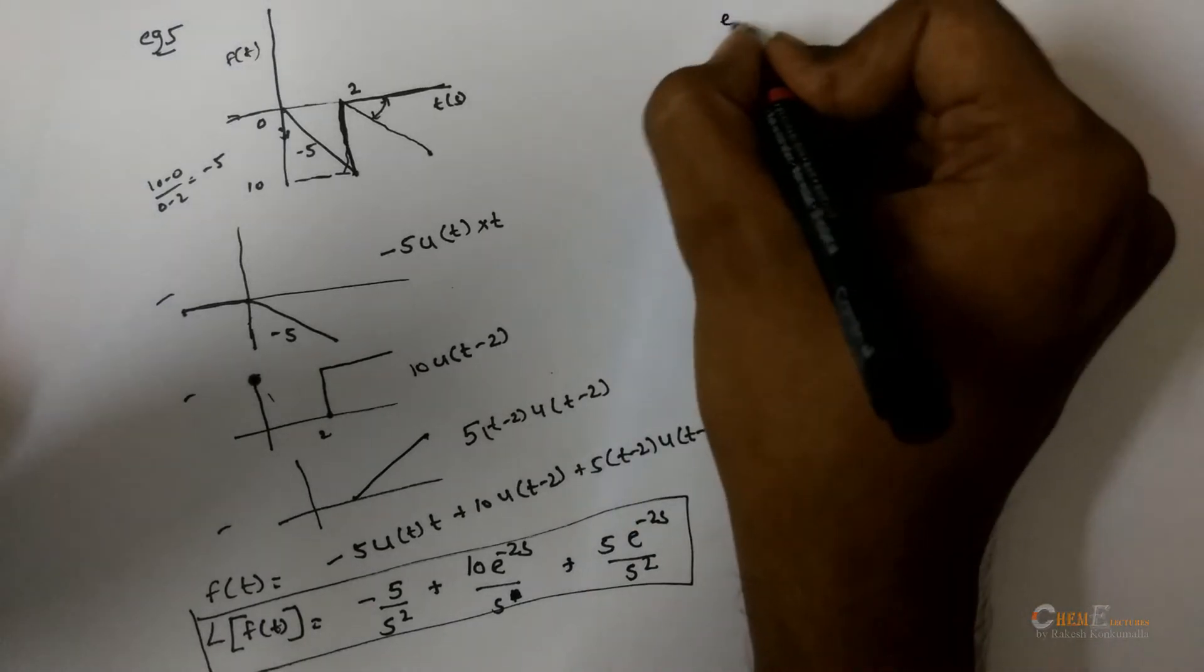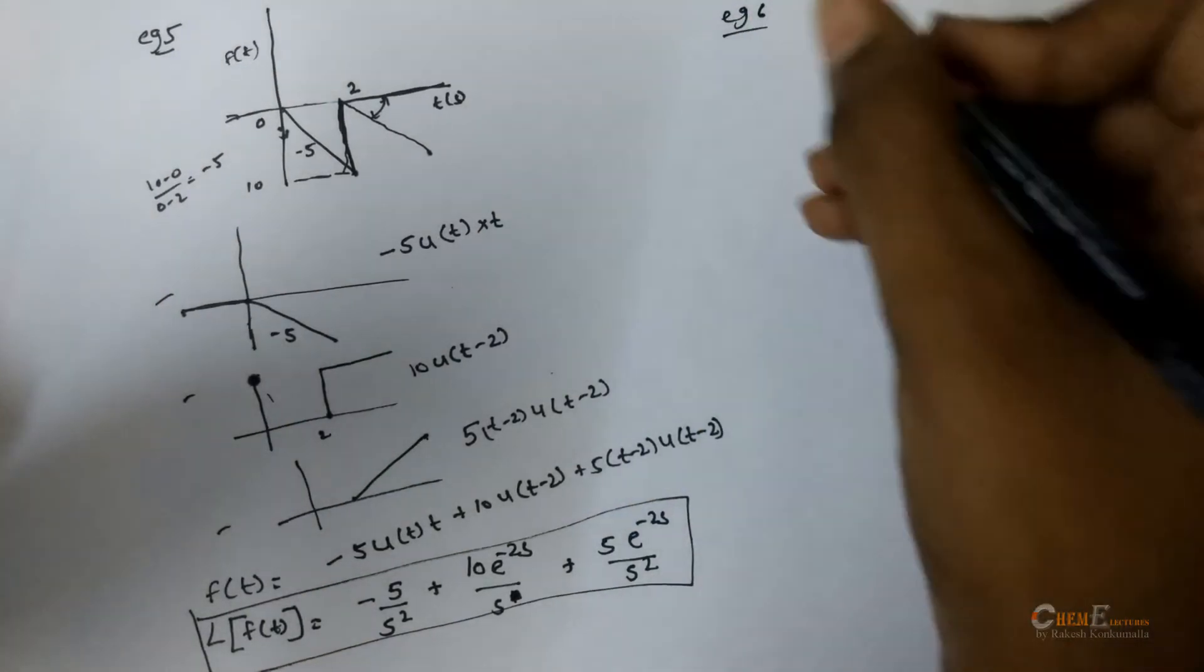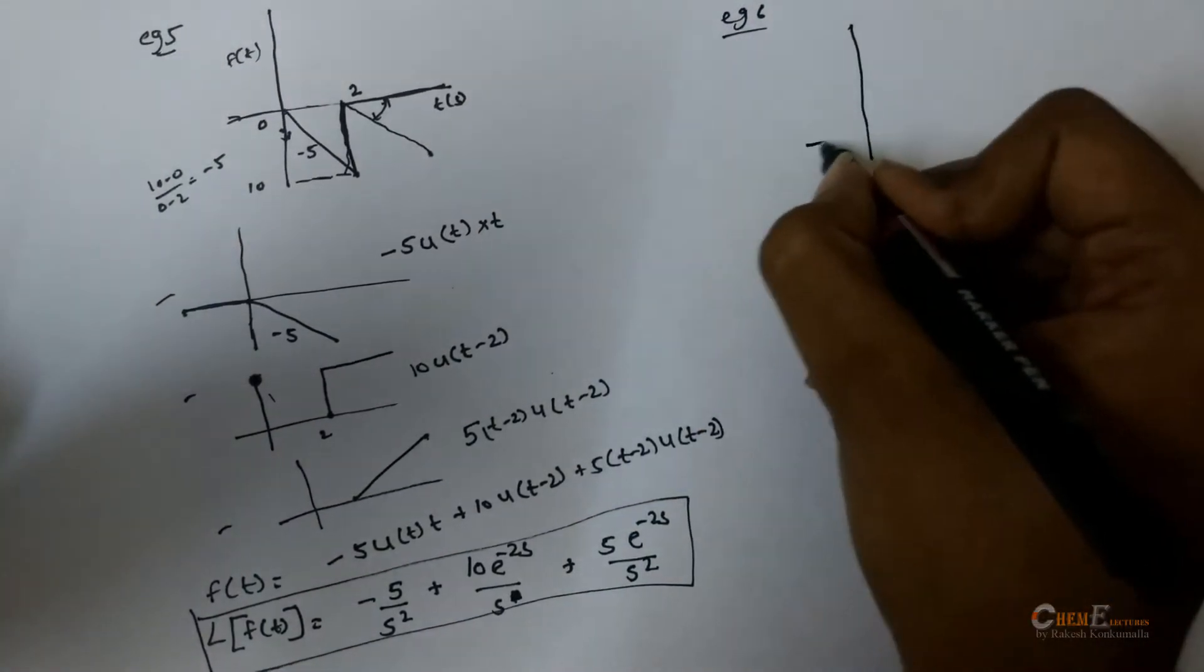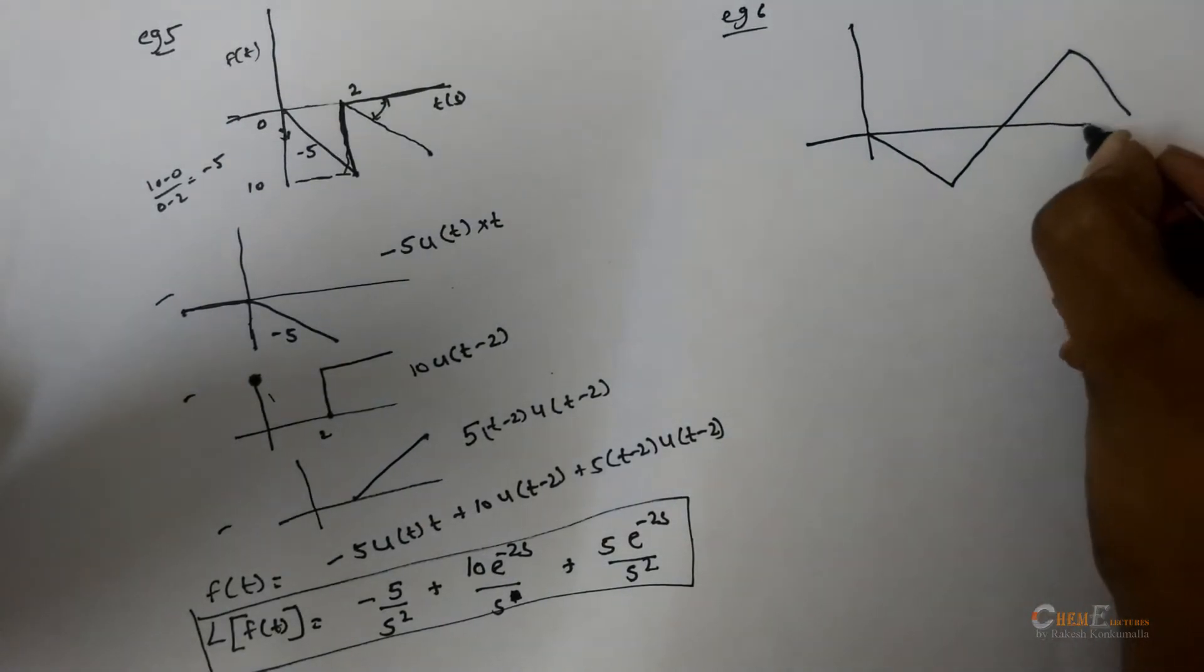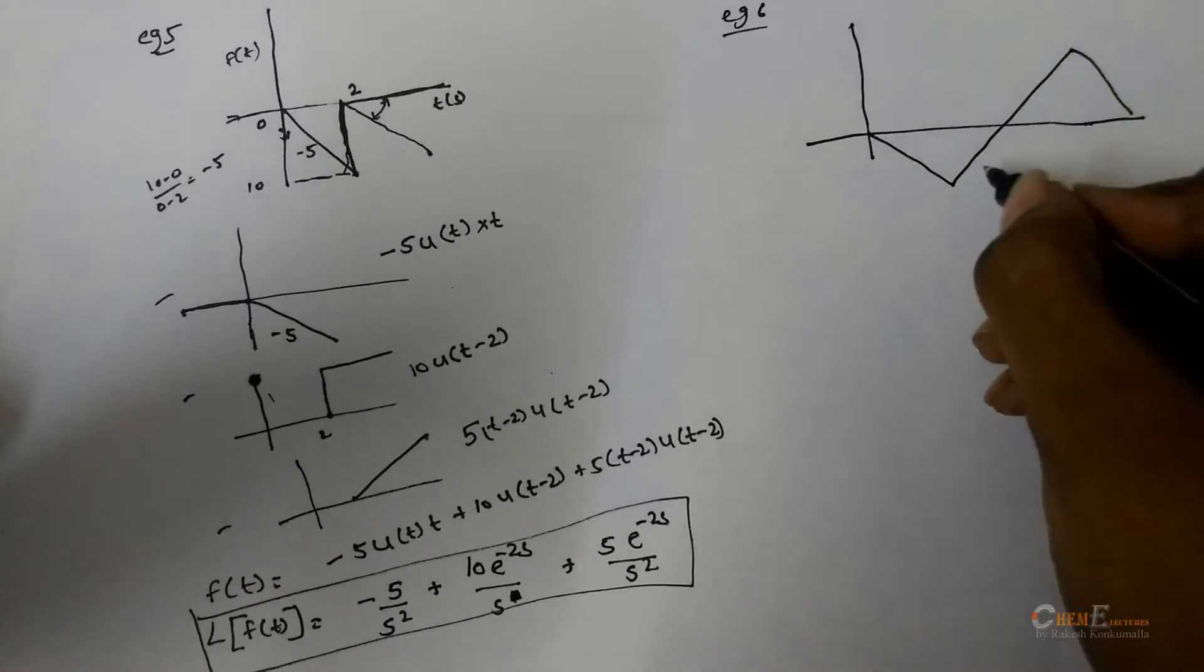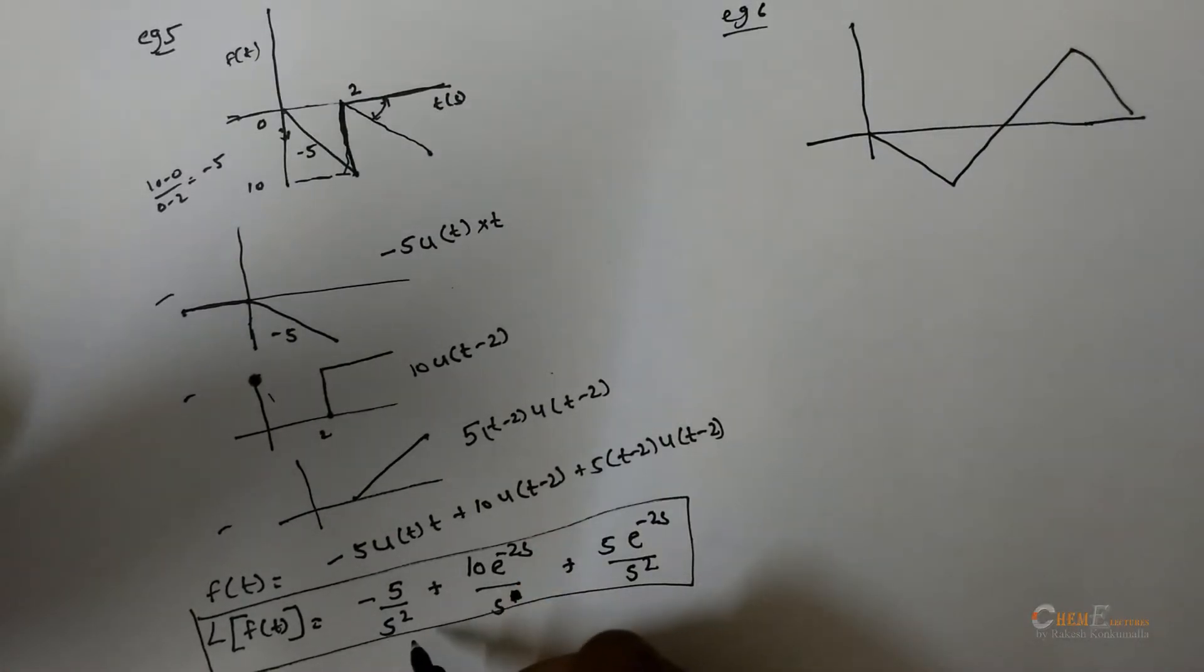Now, let me give another example which will be having a triangular signal. Before going through this, for this just apply the shortcut method.